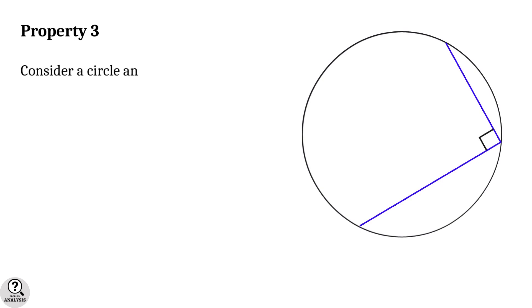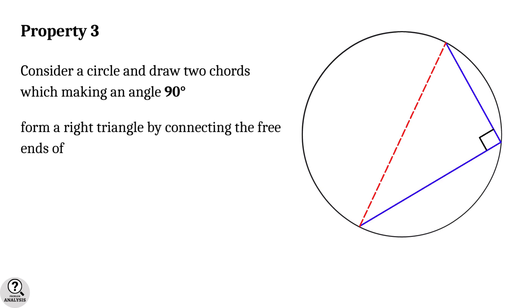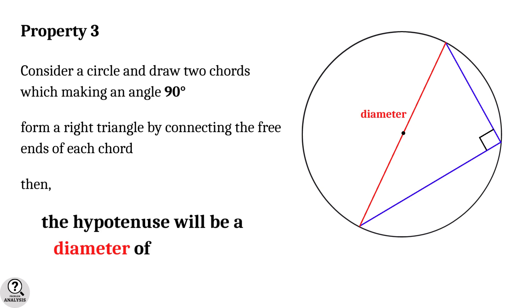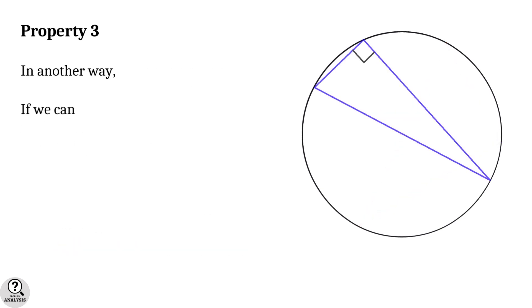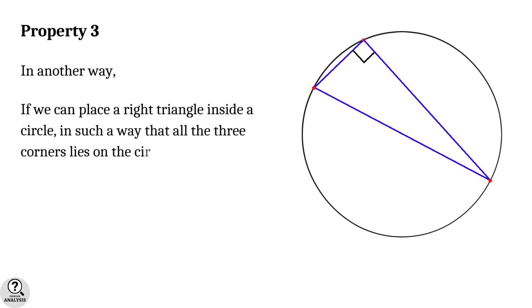Property 3: Consider a circle and draw two chords which form a right triangle. Now form a right triangle using these chords. Then the fact is that the hypotenuse will be a diameter of the circle. Or in another way, if we can place a right triangle inside a circle in such a way that all three corners lie on the circle, then the hypotenuse will be a diameter.